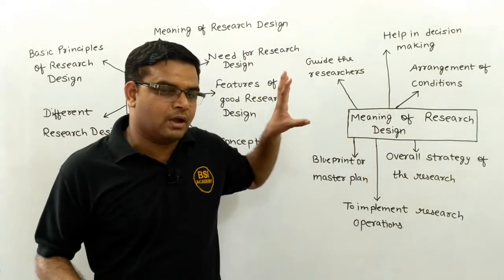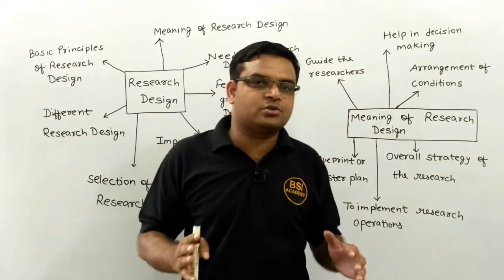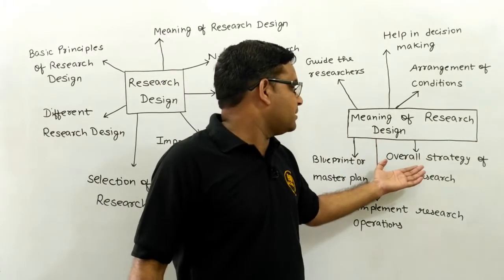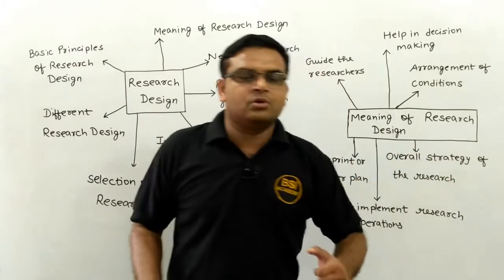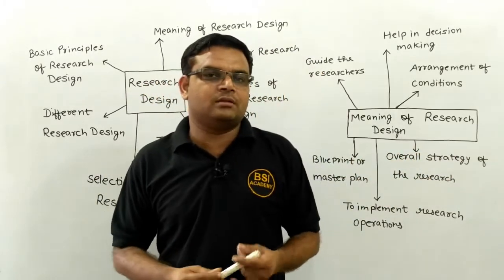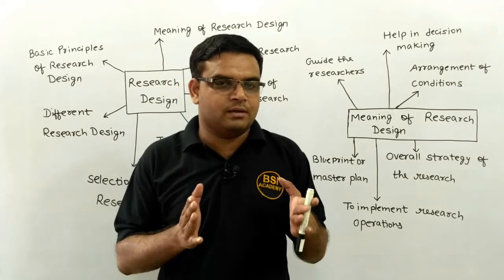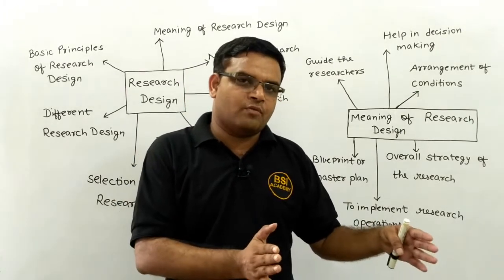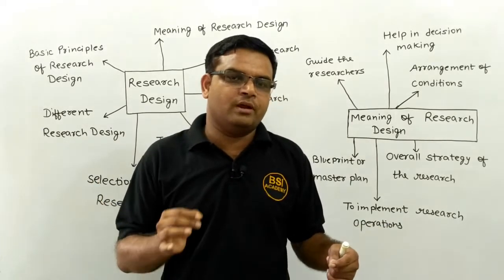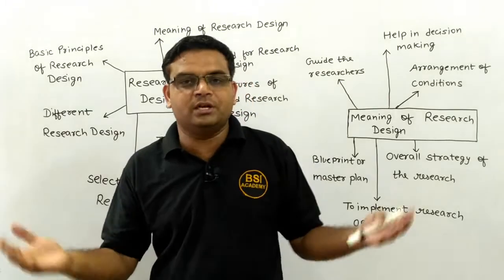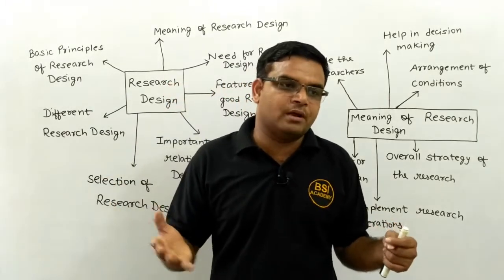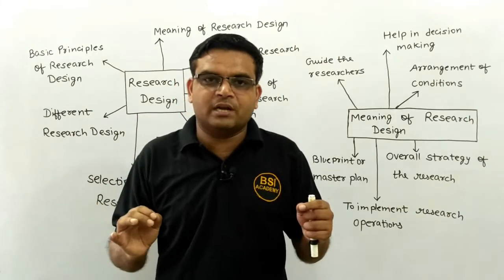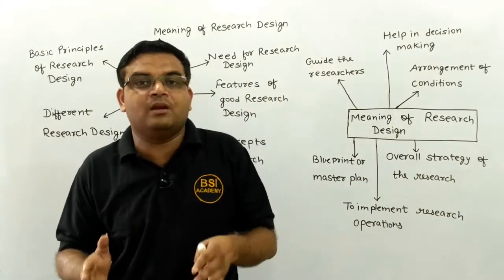These are some of the important arrangements which every researcher wants to follow in their research design. The next important concept is that research design is nothing but the overall strategy of the research plan. Because in the last lecture I discussed there are around 9 to 10 important steps inside the research methodology part, and each and every block of that particular diagram plays a very crucial role in our study. This is nothing but an overall strategy — what kind of strategy I will adopt to complete our research.